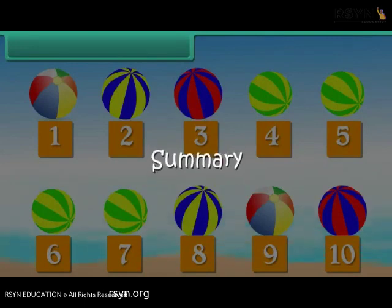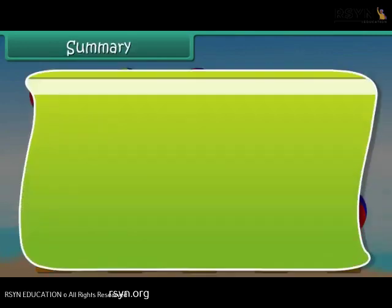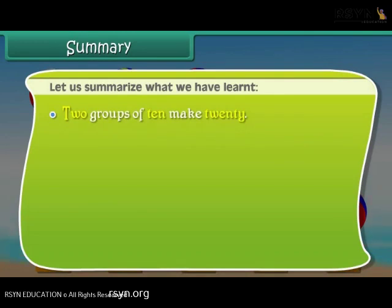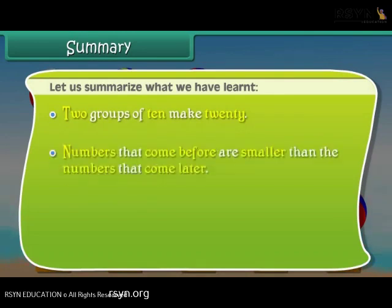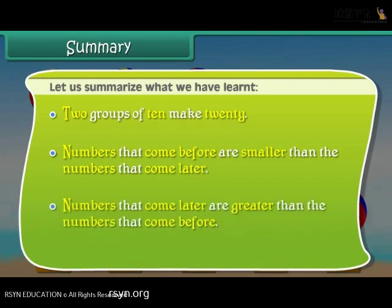Summary. Let us summarise what we have learnt. Two groups of ten make twenty. Numbers that come before are smaller than the numbers that come later. Numbers that come later are greater than the numbers that come before.